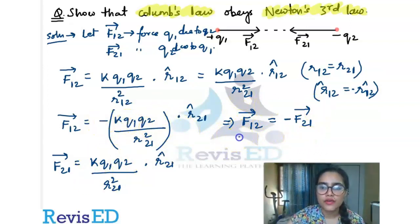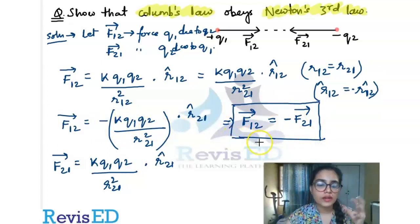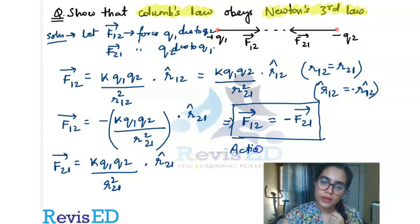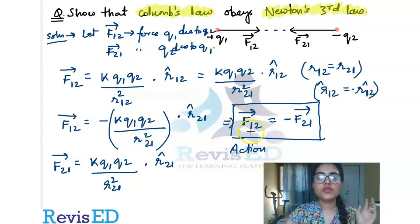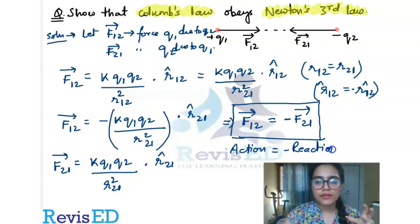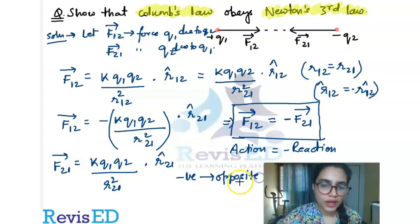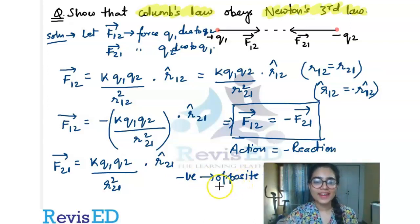So this is the final statement that we are arriving to. And what is it depicting? It is depicting that every action - our action is F12 - so due to the action of F12 there is some reaction which is F21. And how is that reaction? The negative sign represents that it is an opposite type of reaction. So Newton's third law stated that every action has an equal and opposite reaction.